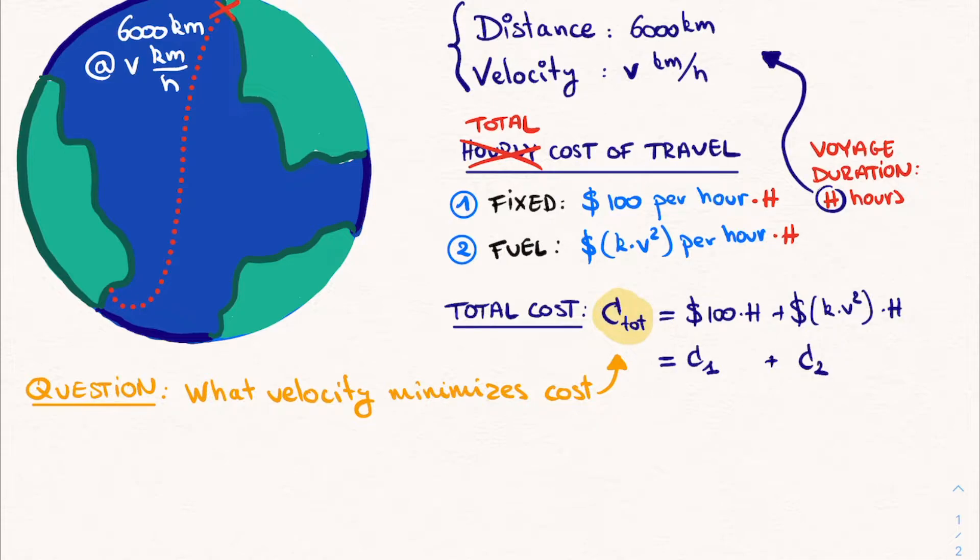Before diving head first into the mathematics, let's first think about this question intuitively. If we want to minimize the total cost, C_total, we want for instance to reduce C1, the fixed component. And we see that C1 only depends on capital H, the total number of hours that is required to complete the journey. Therefore, if we want to reduce C1, we want to reduce this number of hours. Which in turn is reduced by increasing the velocity. Because if we are going faster, the journey will take a shorter amount of time. Therefore, to reduce the total cost, we increase the velocity.